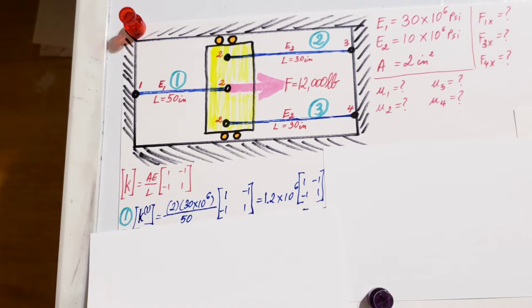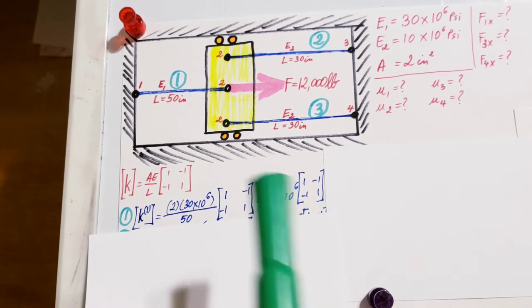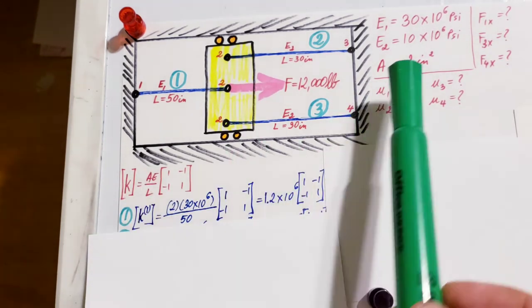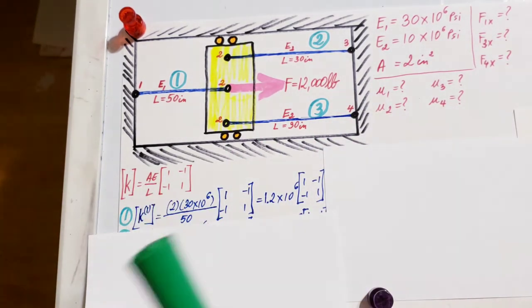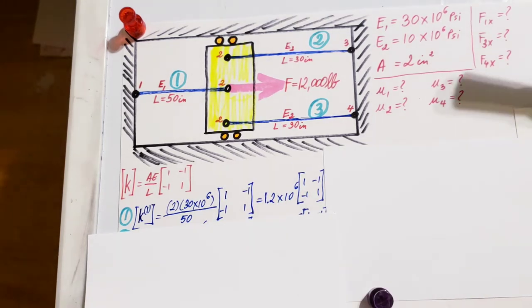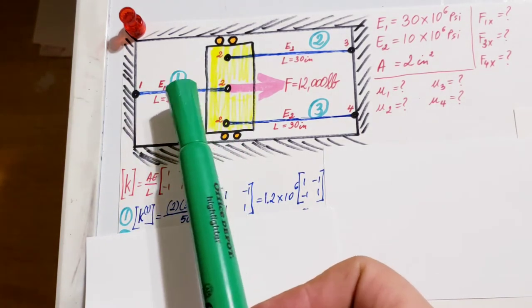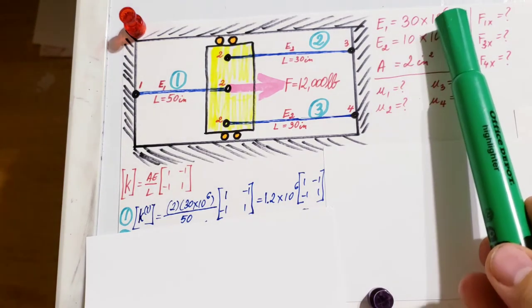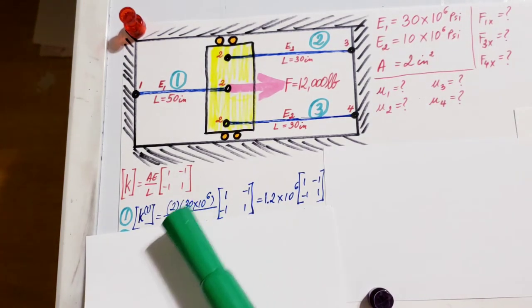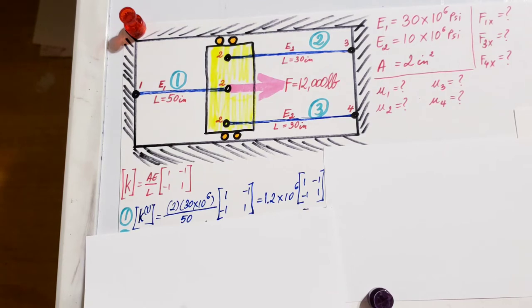This is the formula for local stiffness matrices: AE over L times this 2x2 matrix [1, -1; -1, 1]. Fill it out: A is given. For element 1, we have Young's modulus E1 = 30 times 10^6 divided by its length which is 50 inches.